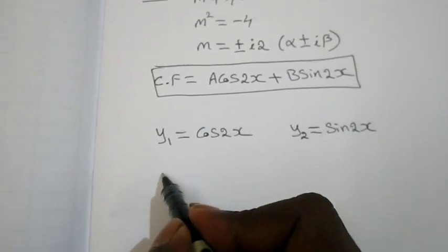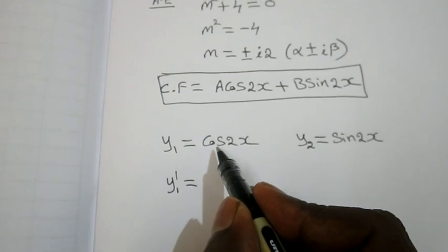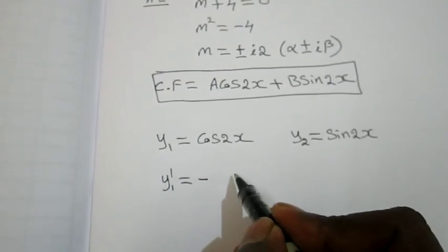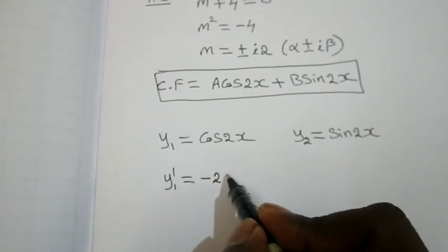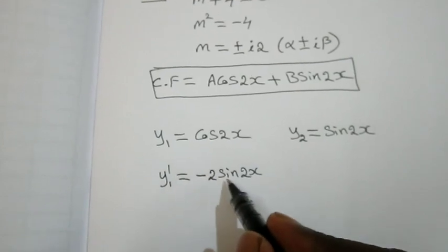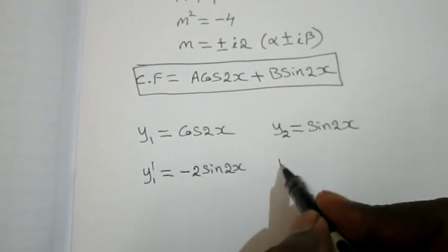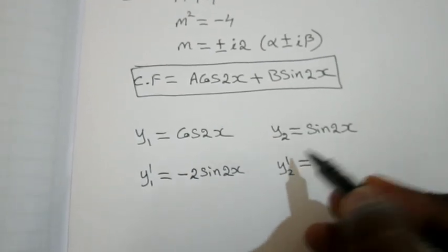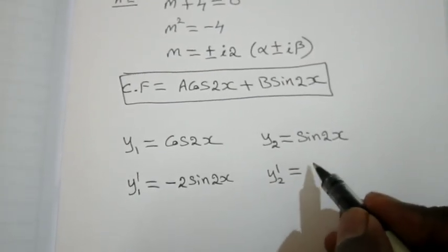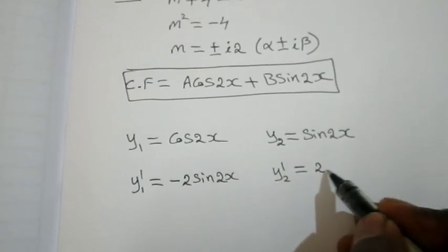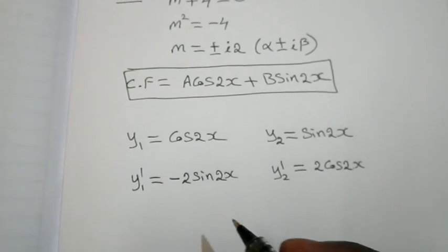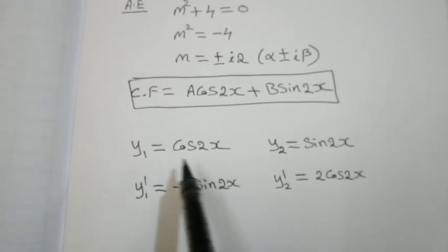Now I find the derivatives: y1' is the differential of cos 2x, which is -2 sin 2x. And y2' is the differential of sin 2x, which is 2 cos 2x. So I have found the derivatives y1' and y2'.